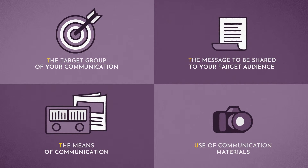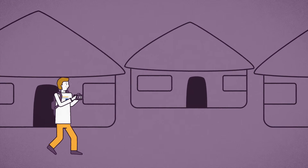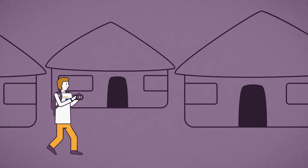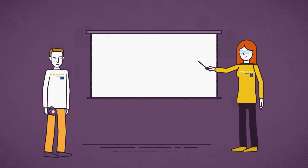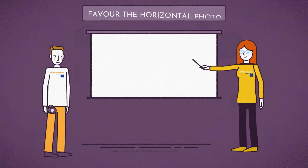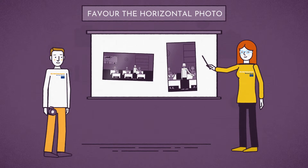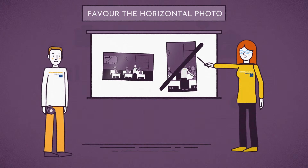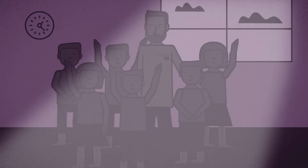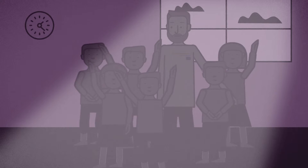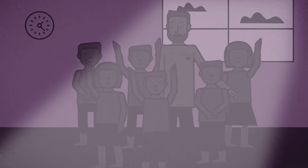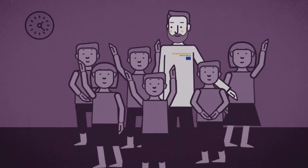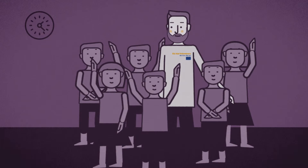Use of communication materials. To illustrate your projects and activities, photos and videos play a very important role. Here are some tips to help you achieve the best results. When taking photos, remember to favour the horizontal photo as it's always better to use. Check the light — make sure that the person's face is well lit from the front, to allow the audience to really see the expression and eyes of the person.